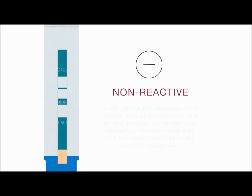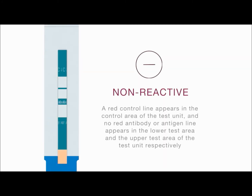Non-reactive: a red control line appears in the control area of the test unit. No red antibody or antigen line appears in the lower test area and the upper test area of the test unit, respectively. A non-reactive test result means that HIV-1 or HIV-2 antibodies and HIV-1 P24 antigen were not detected in the specimen.